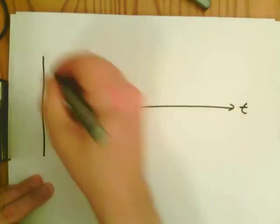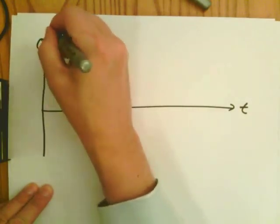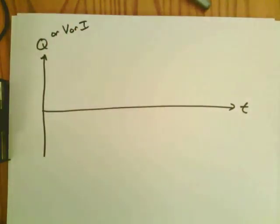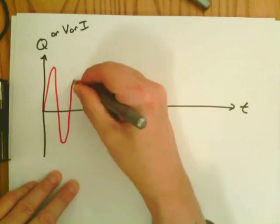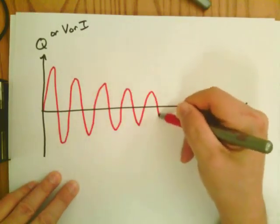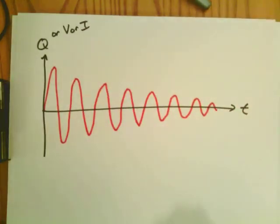So for this damped oscillator, then, we have some oscillation in Q, V, or I. I'm not going to worry too much about whether it's sine or cosine.